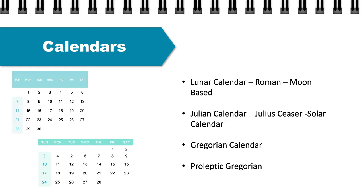Then there was one more calendar, better than the Julian, which was the Gregorian calendar — and that became a standard. After Gregorian, a calendar called Proleptic Gregorian was introduced. The Gregorian calendar can support dates beyond 15th October 1582. If we had to represent dates before 1582, then the Julian calendar had to be used. So initially a hybrid calendar — a combination of Julian and Gregorian — was used to support dates previous to and after 1582. But then Proleptic Gregorian came in, supporting all dates, so no two calendars were required.